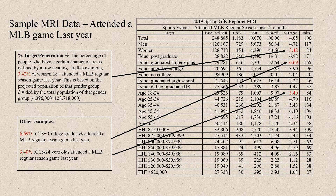This tells us what percentage of women we've attracted to go to a baseball game. For example, people with a postgraduate degree — 6.69% of 18-plus college graduates attended a Major League Baseball game last year. And 3.4% of 18- to 24-year-olds attended a Major League Baseball game last year. You might notice that is the second lowest percentage — only the 65-plus group had a lower percentage at 2.34%.